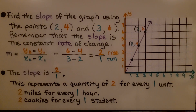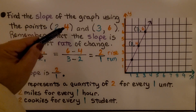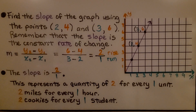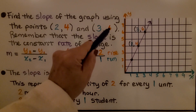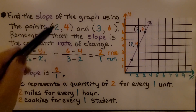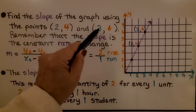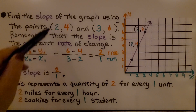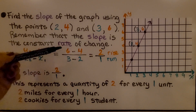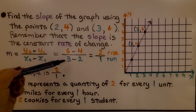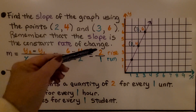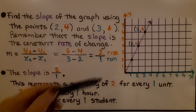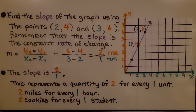Find the slope of the graph using the points (2, 4) and (3, 6). Remember that the slope is the constant rate of change. Using our slope formula, the second y-value is 6 and the first is 4, so we do 6 minus 4. The second x-value is 3 and the first is 2, so we have 3 minus 2. That gives us 2 over 1 — a rise of 2 and a run of 1. The slope is 2 over 1.